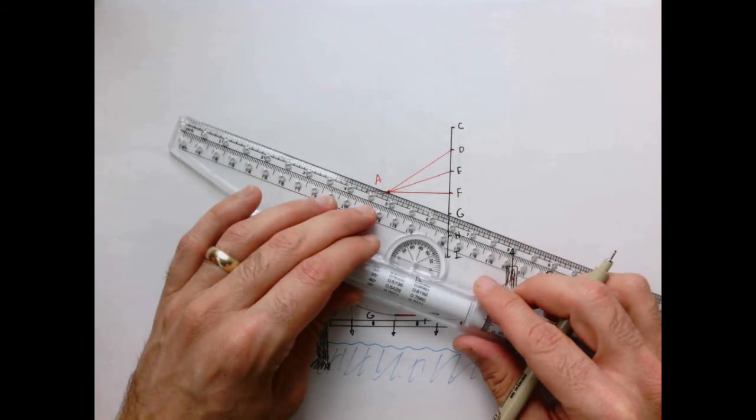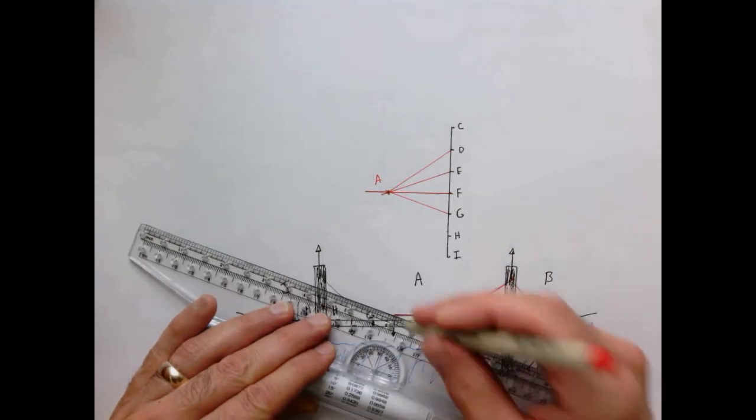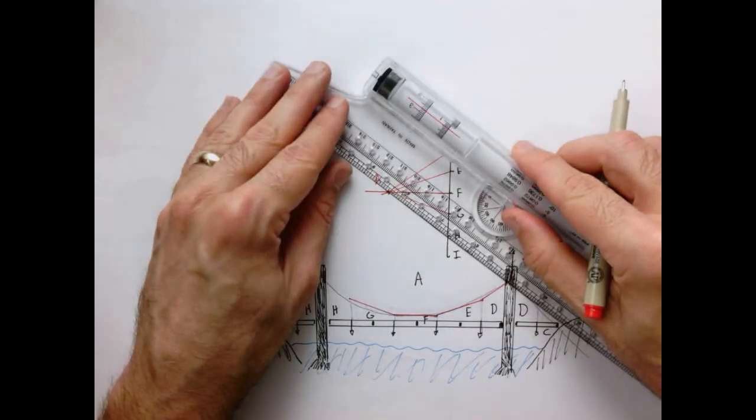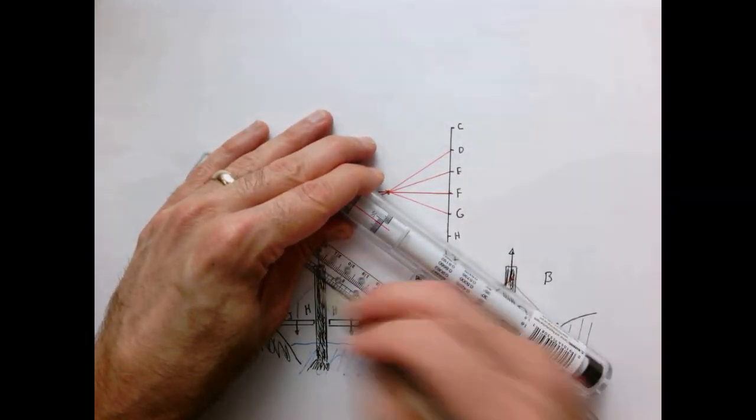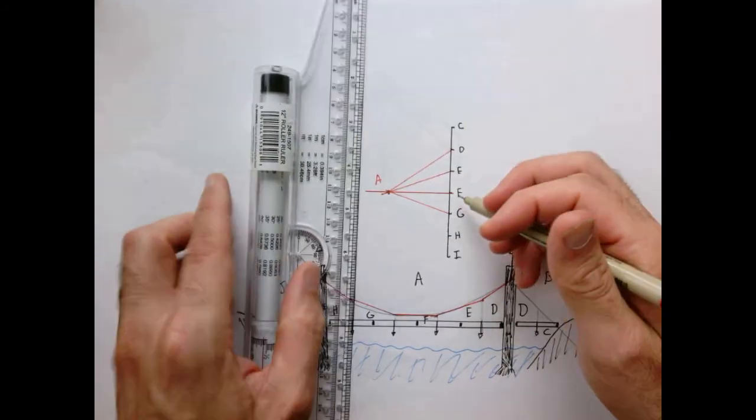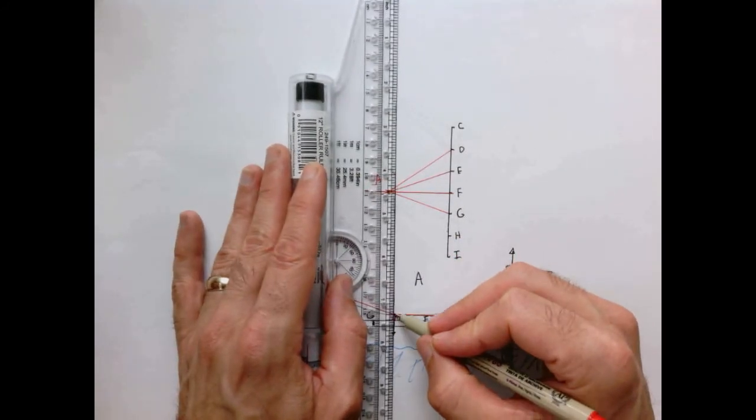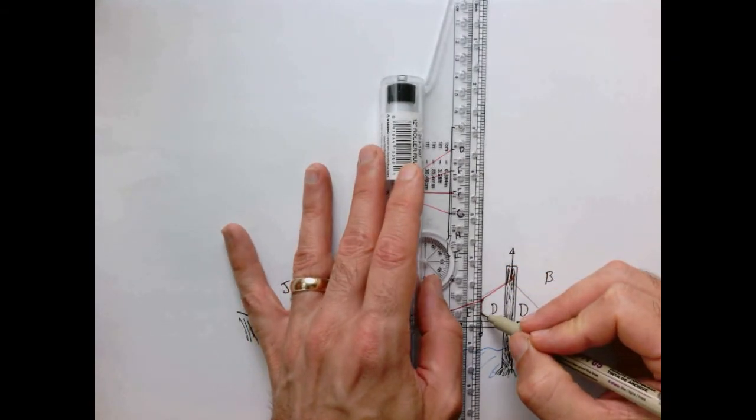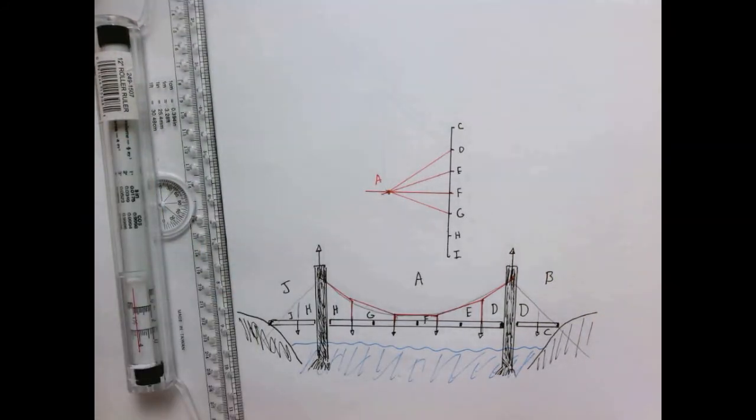By symmetry, the other side is going to look exactly the same. Bring that down. Then let's bring that down. Now I have to draw my horizontal cables to finish my structure. There is the main span, so there's the shape. That looks pretty good.